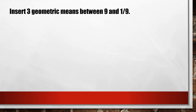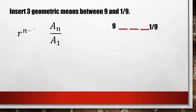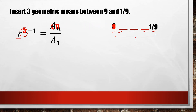Another example: insert 3 geometric means between 9 and 1 over 9. We need to visualize our problem — we are asked to insert 3 geometric means between these two values. The next step is to find the common ratio using the same formula: R raised to n minus 1 equals a sub n divided by a sub 1. The number of terms is 1, 2, 3, 4, 5 — so n equals 5. Our last term a sub n is 1 over 9 and our first term is 9.